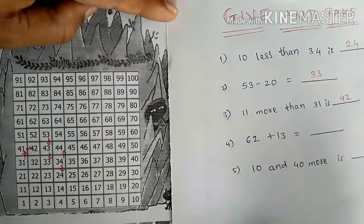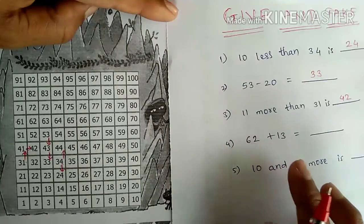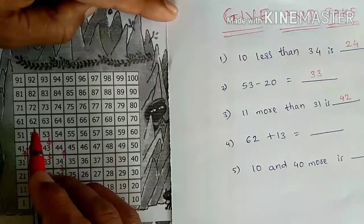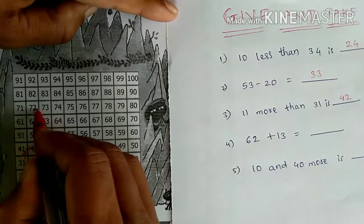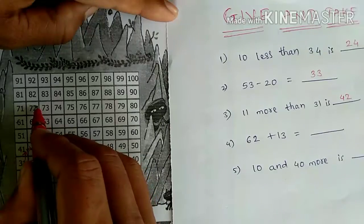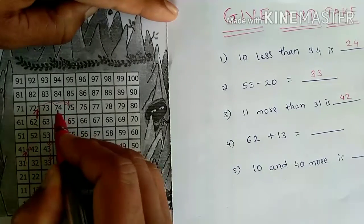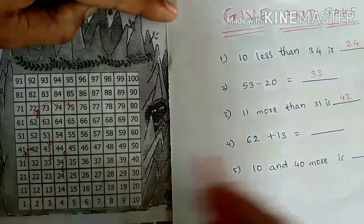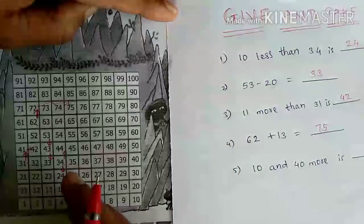The next one: 62 plus 13. 62 is here. 62 plus 13 means we move one step forward, which adds 10. The 3 remaining — we move three more individual steps forward. So moving those steps, we get 75. By using this table, we can move forward, downward, or upward to get the answers.